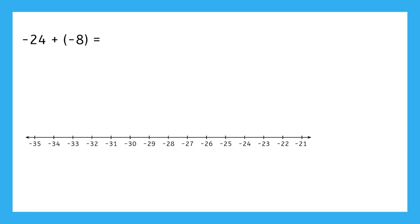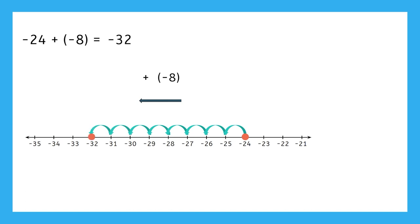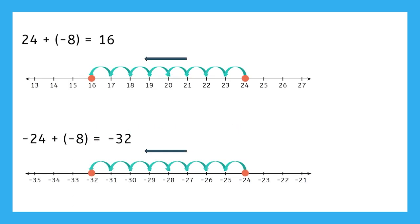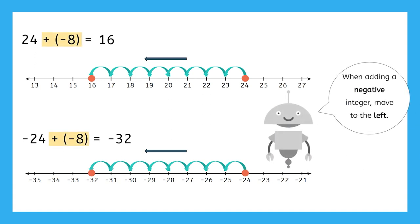Let's move on to another situation: adding two negative integers. Negative 24 plus negative 8. We just saw that when we added a negative number, we moved to the left. So let's start on the number line at negative 24 and move 8 to the left, giving us negative 32. So far, we've discovered that when we add a negative integer, we move to the left on the number line.